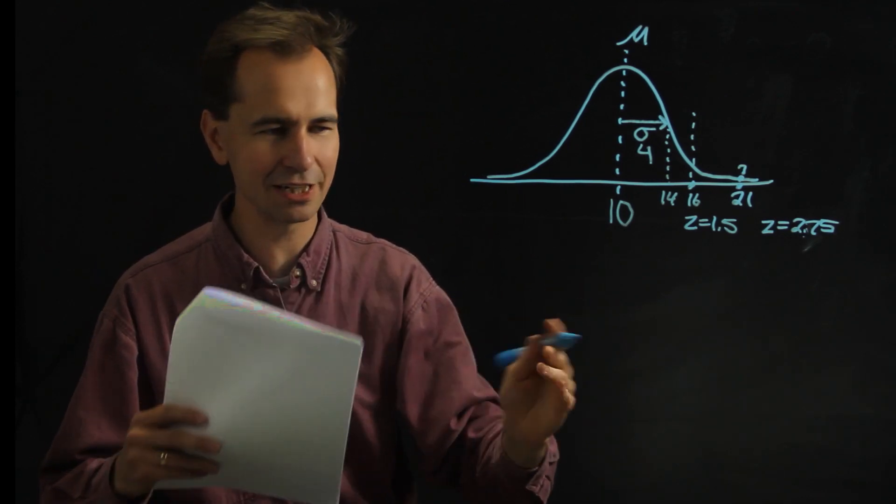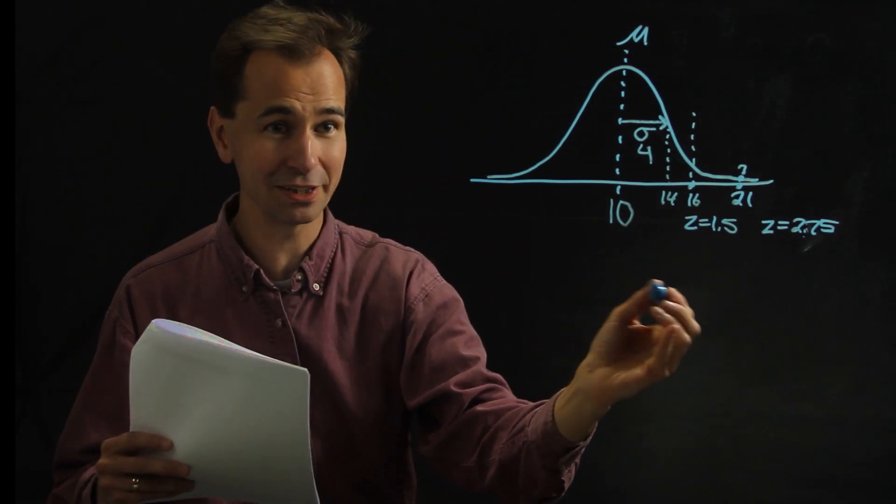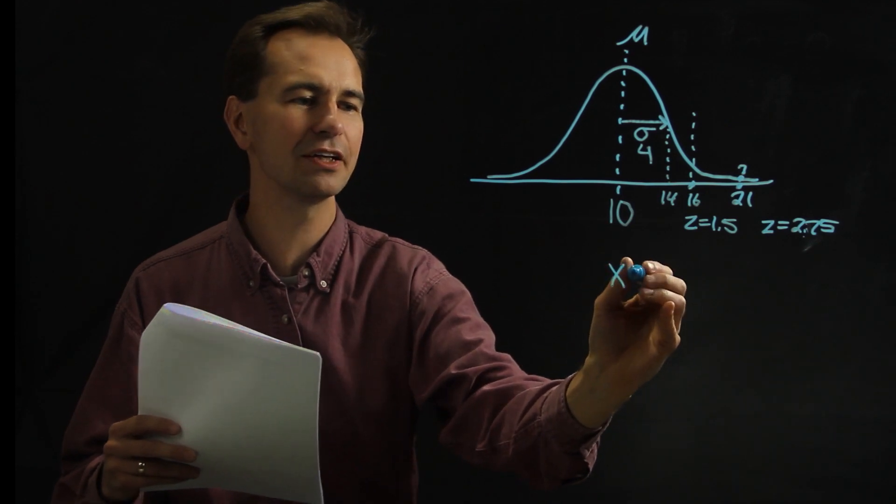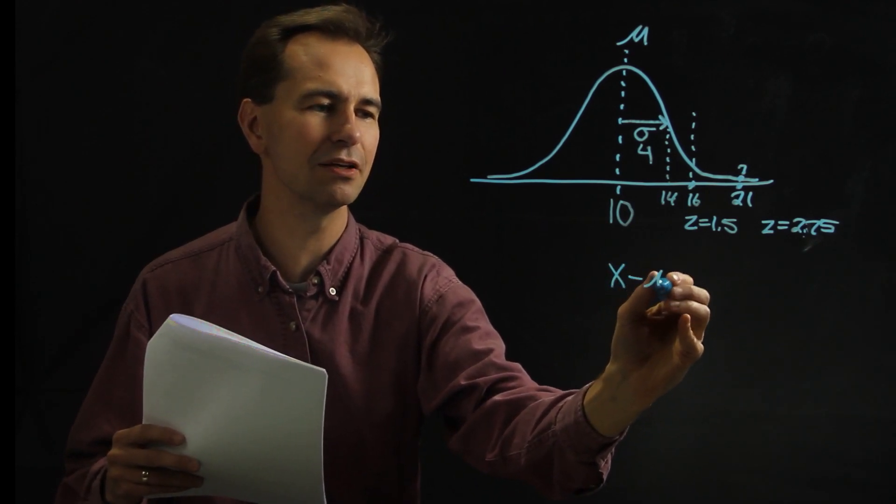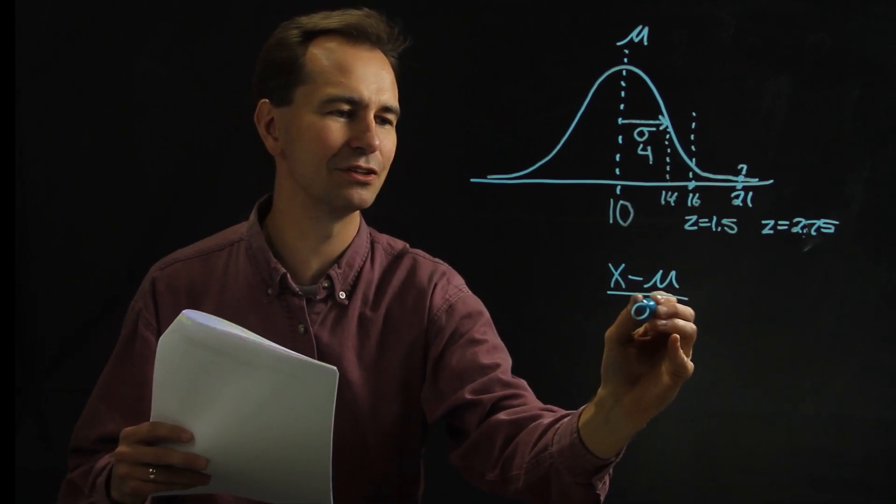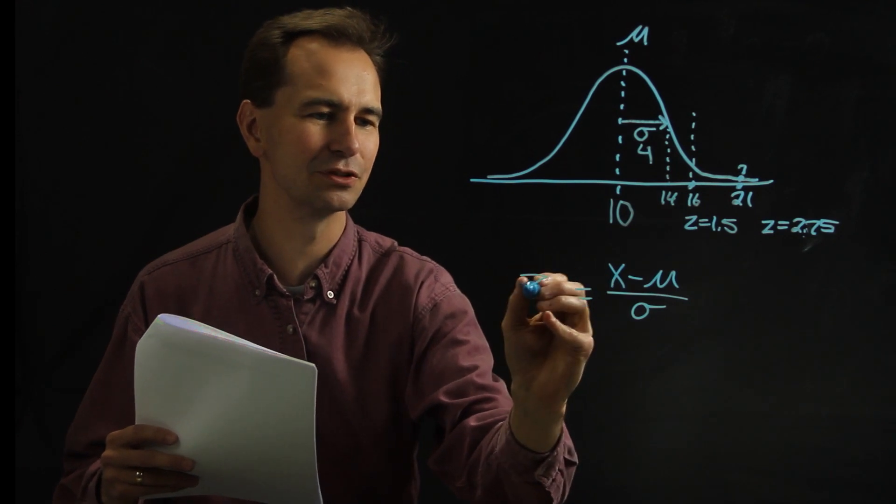So a good way to do this in general is, if you know what the point is that you're interested in, all you have to do is subtract off the mean, and then divide by the standard deviation, and that gives you your z-score.